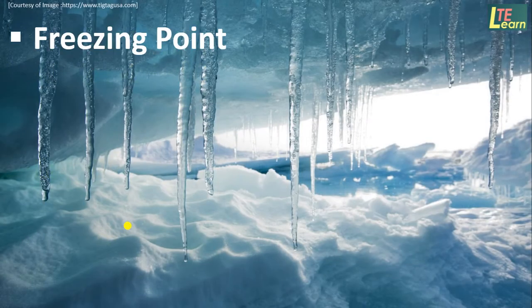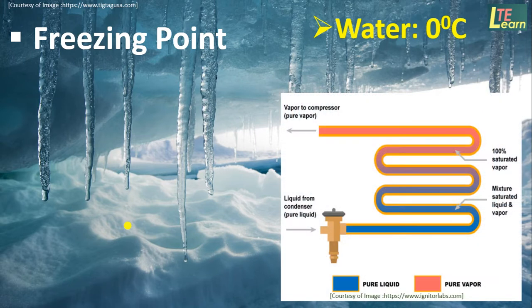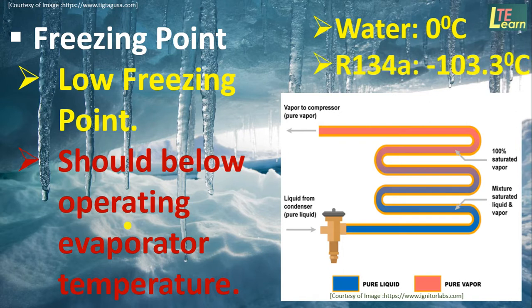Freezing point is the temperature at which the working substance solidifies. As the freezing temperature of water is 0°C, if used in a vapor compression refrigerant system, after expansion the temperature goes below 0°C and it will solidify, making circulation in the cooling coil impossible. Hence, freezing point of refrigerant should be below operating temperature — it should be low. Refrigerant R134A having a freezing point of -103.3°C is used in a domestic refrigerator.